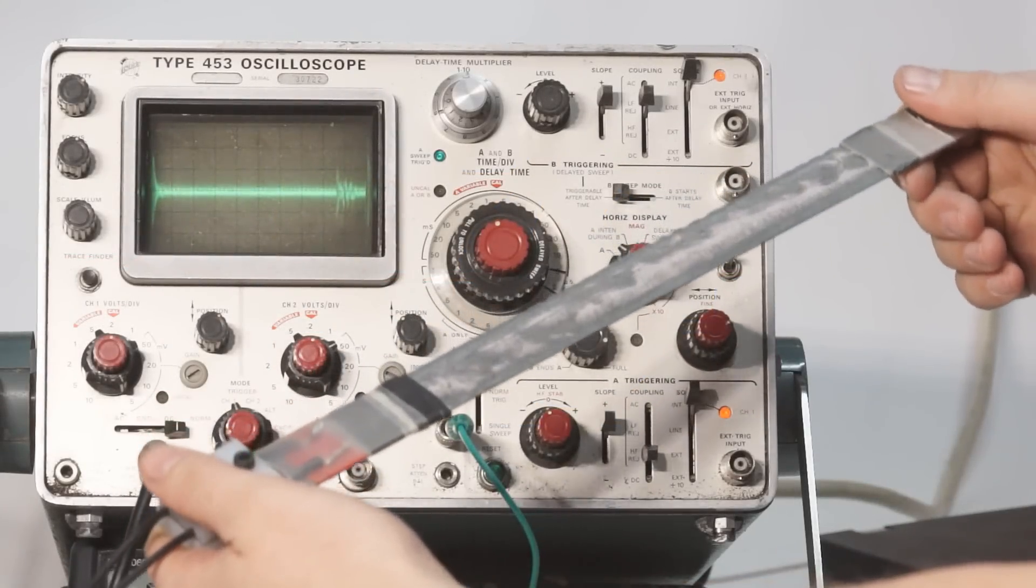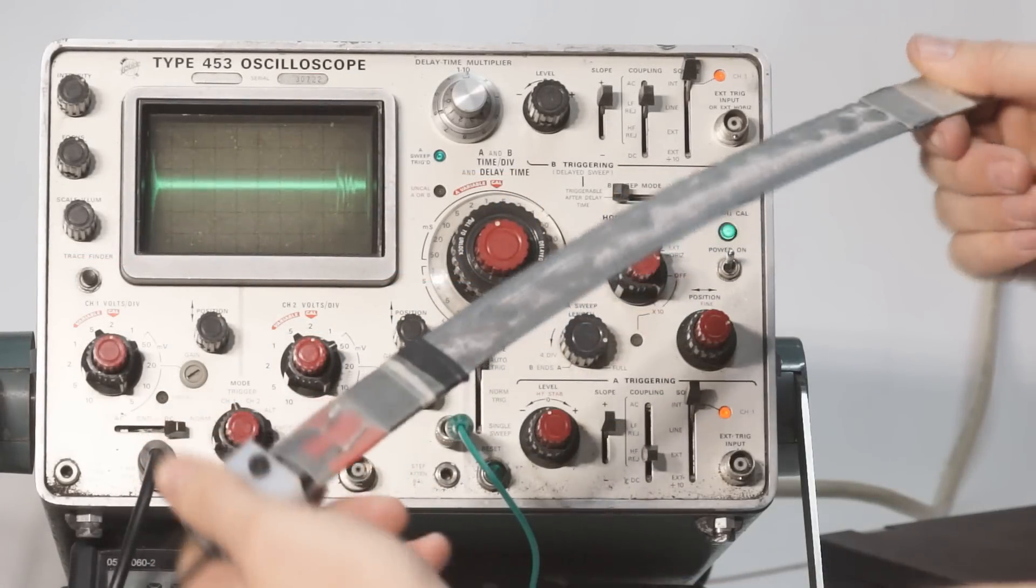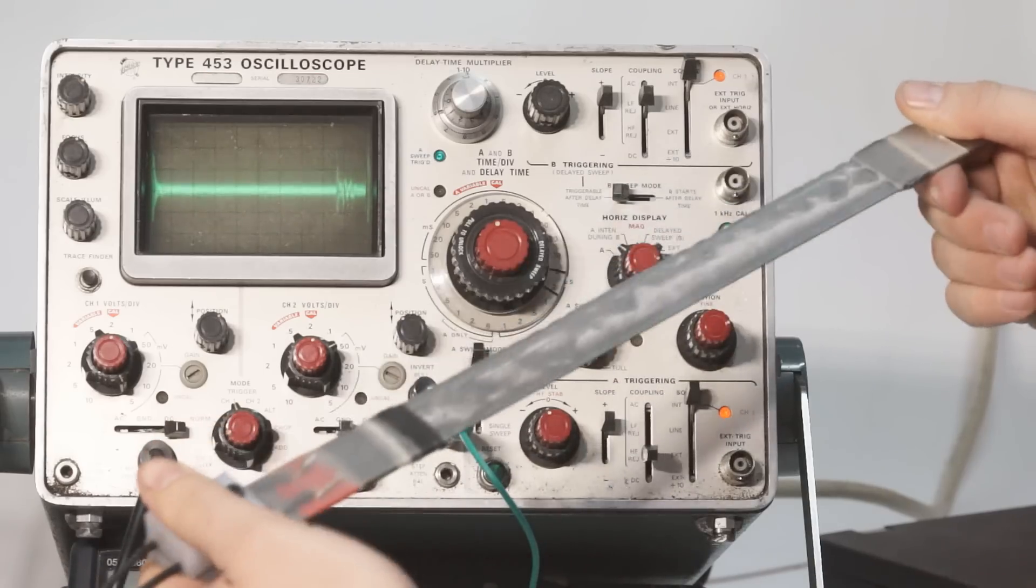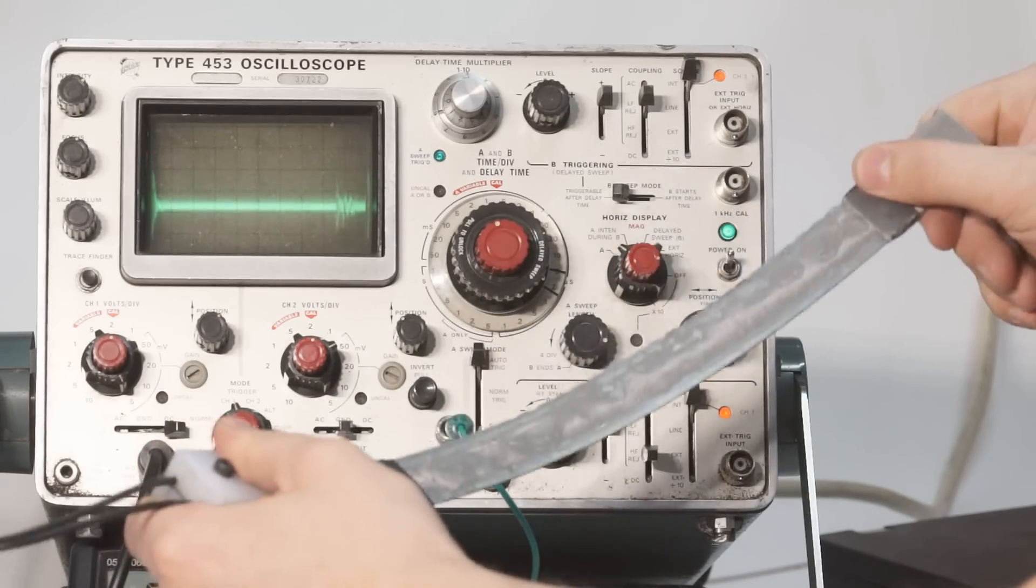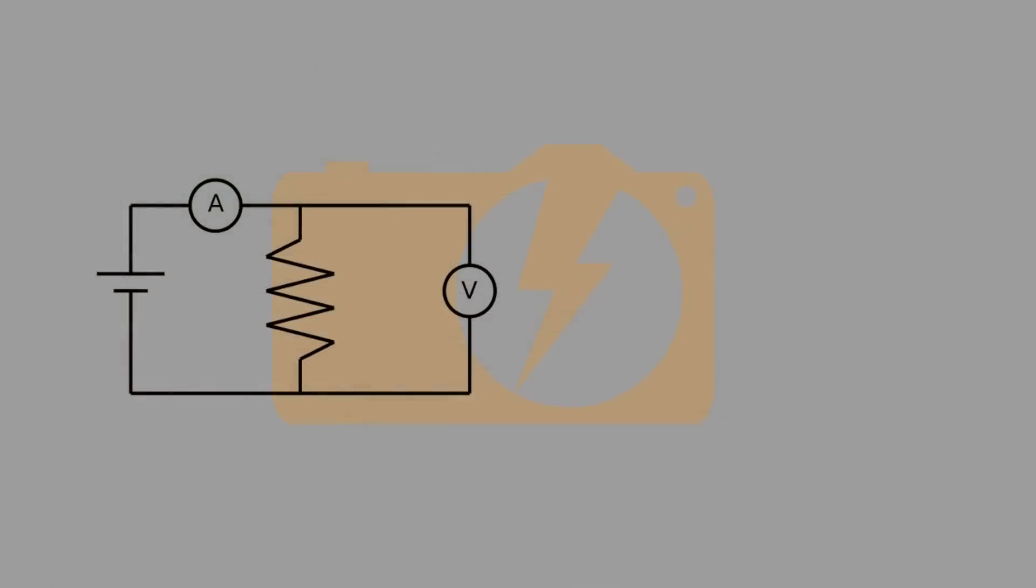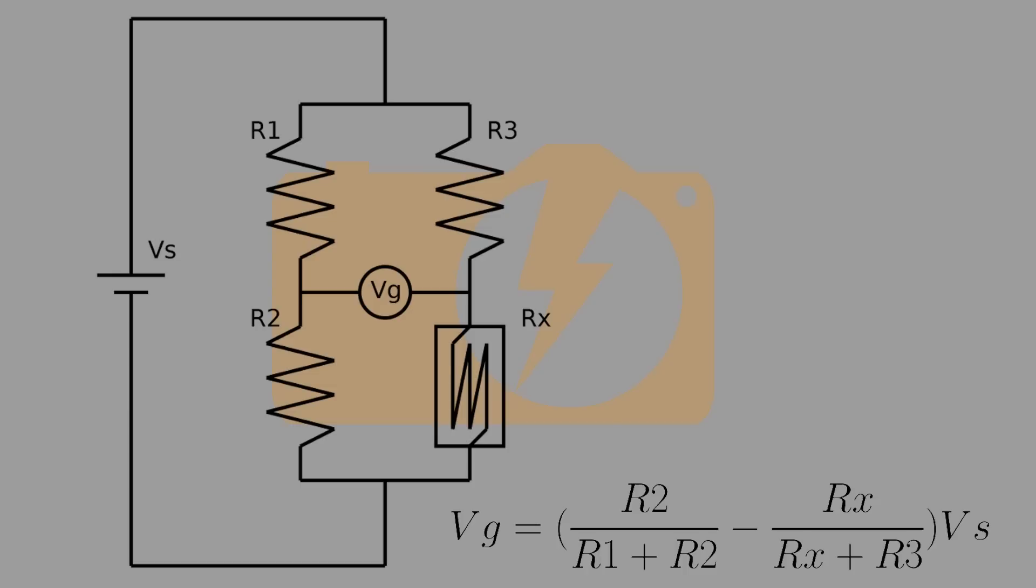When flexed through its entire range of motion, my strain gauge changes in resistance by less than one tenth of an ohm. With a base resistance of 50 ohms, 4-wire measurement is infeasible. I instead used a Wheatstone bridge which will measure only the change in resistance rather than the absolute value.